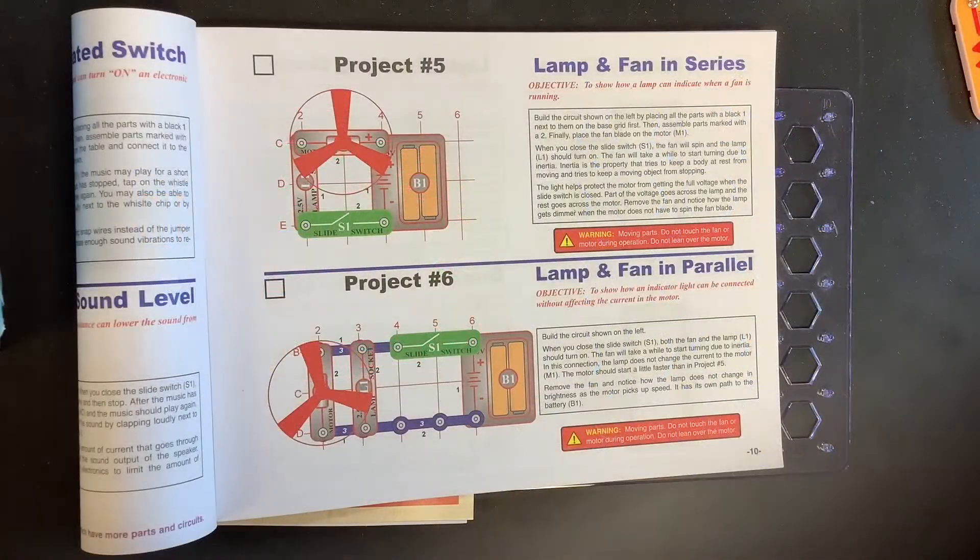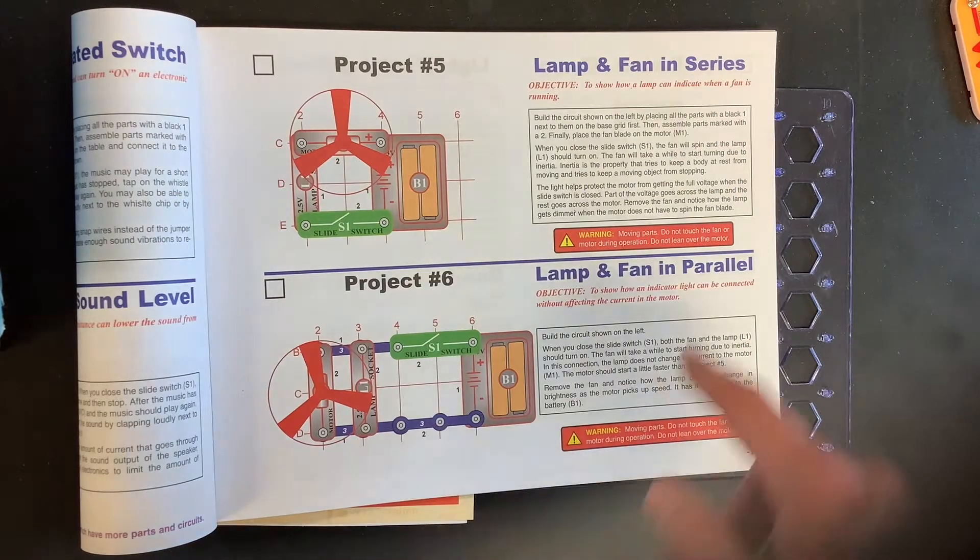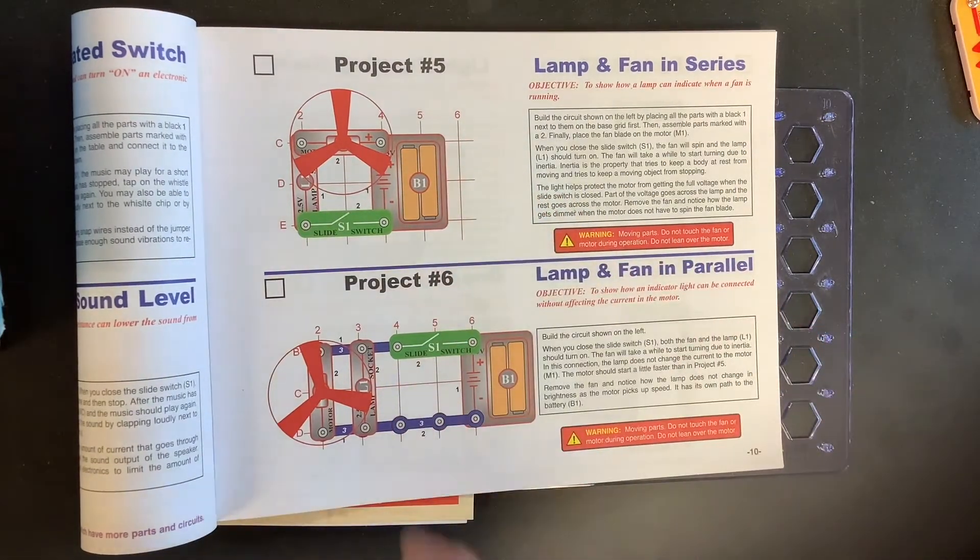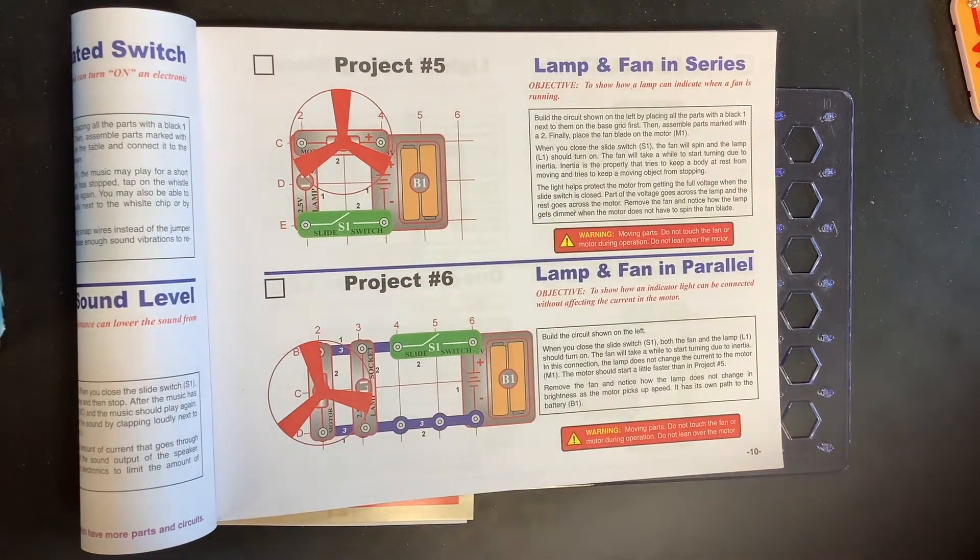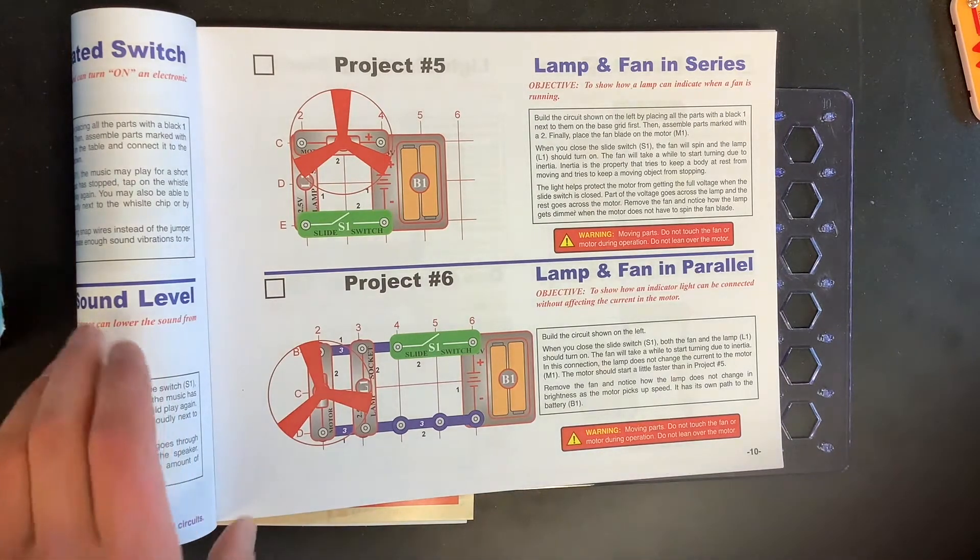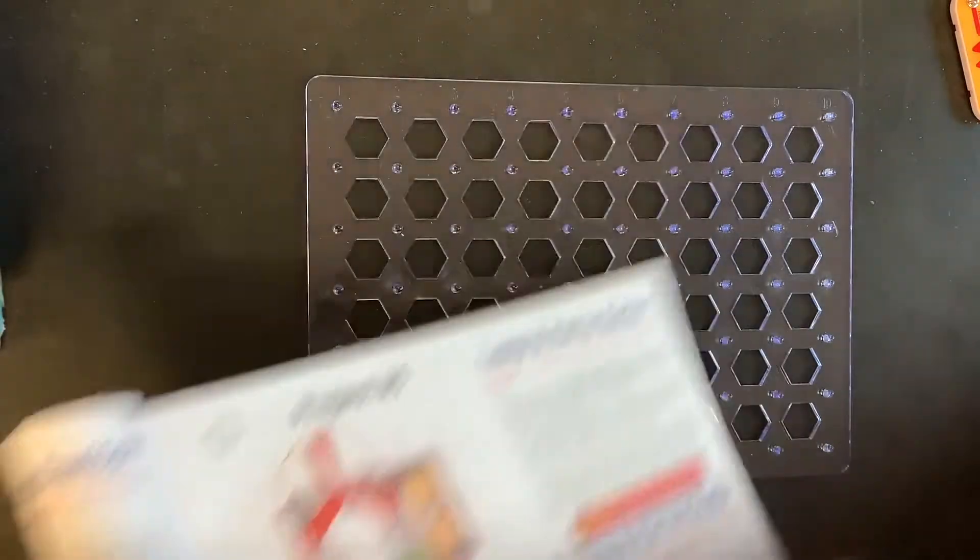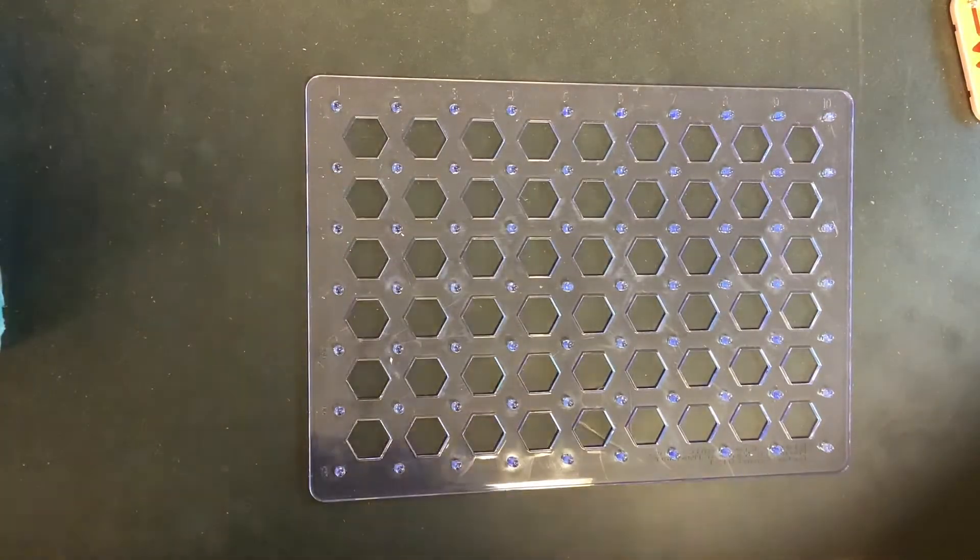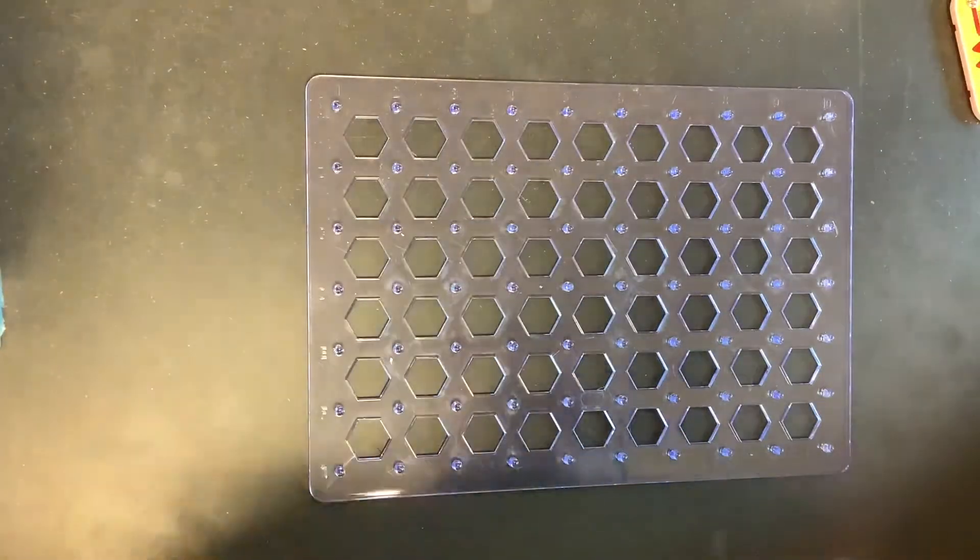So the next project that we're going to be working on are these projects number five and number six. It's a lamp and fan in series, and then a lamp and fan in parallel. So the first thing that we're going to do is get started and build that project number five, which is the lamp and fan in series.